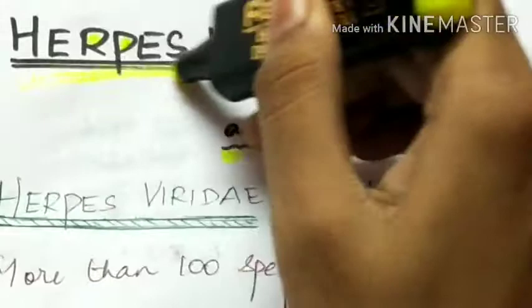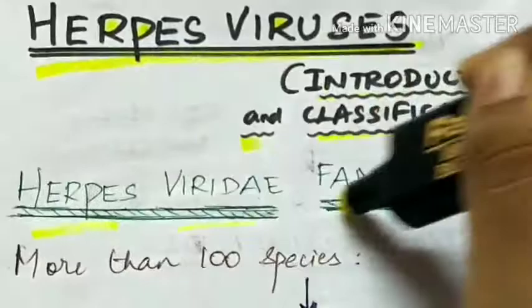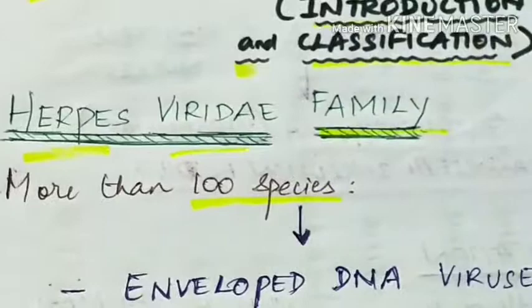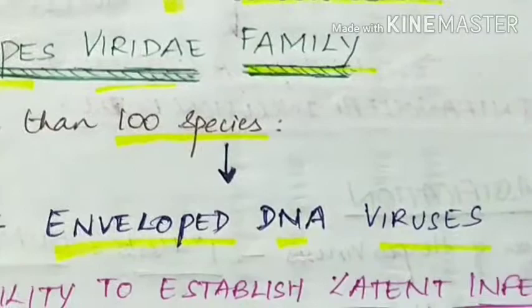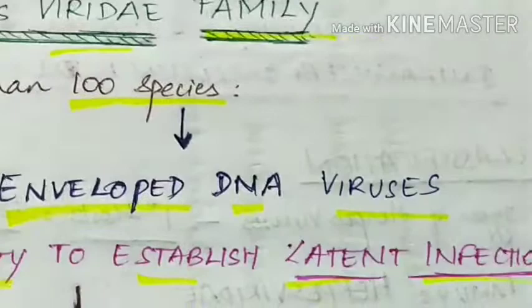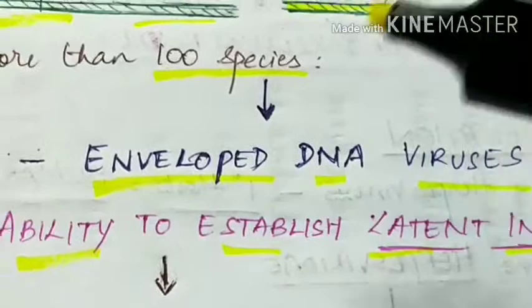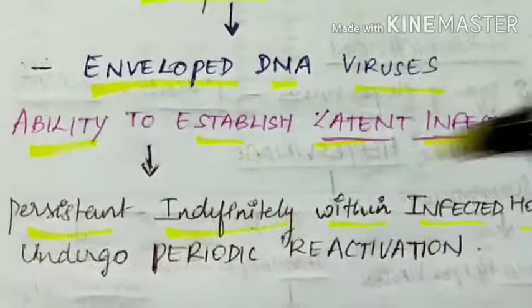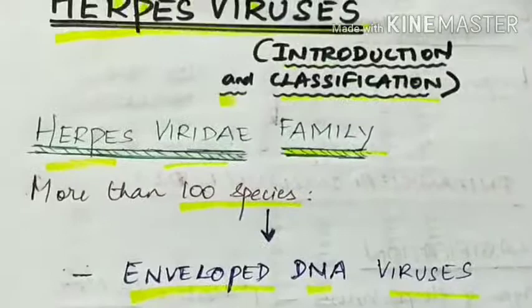The herpes viruses belong to the herpes viridae family, which consists of more than 100 species. All species are enveloped DNA viruses. The characteristic property of this family is the ability to establish latent infections, which persist indefinitely within the infected host and undergo periodic reactivation.